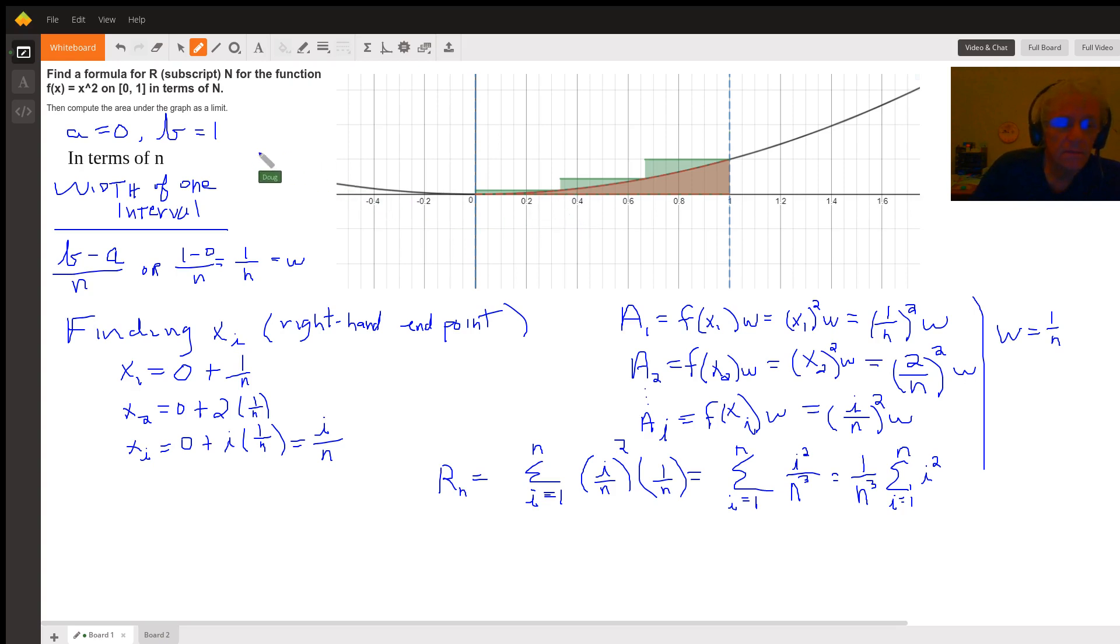If we let a equals zero, the left-hand endpoint, b equal one, the right-hand endpoint, we can calculate the width of one interval as the length of the entire interval b minus a divided by the number of intervals, or in our case one minus zero over n. One over n is what w is.